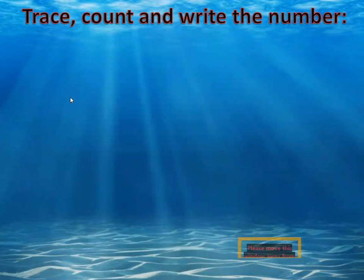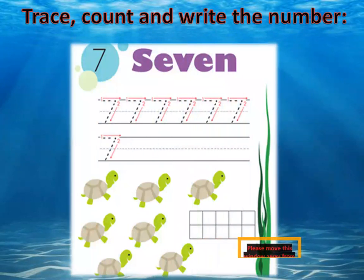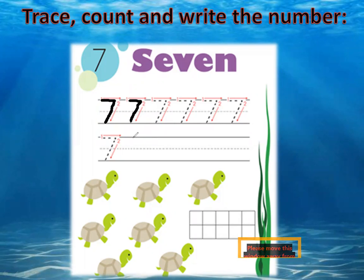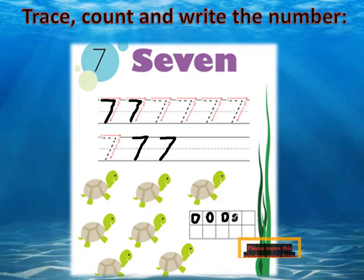Trace and count, then write the number. How do we trace number seven? We go with a line to the back and then a slanting line. Line to the back and then slanting line. How many circles do we draw here? Let's draw seven circles: one, two, three, four, five, six, seven — very good, seven!